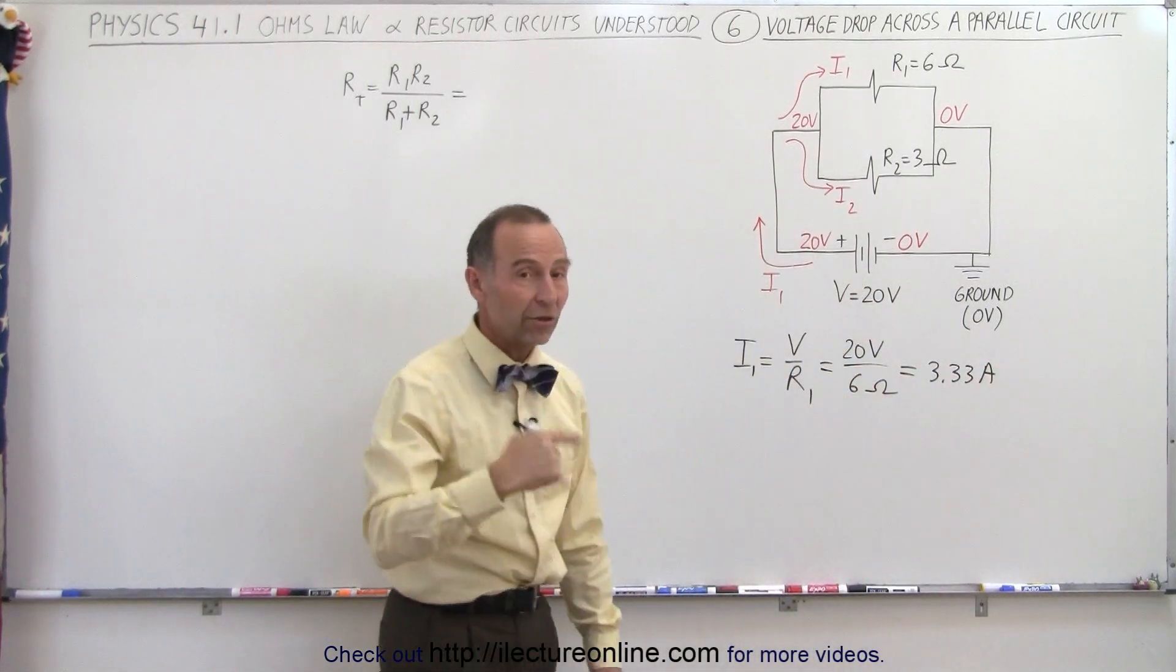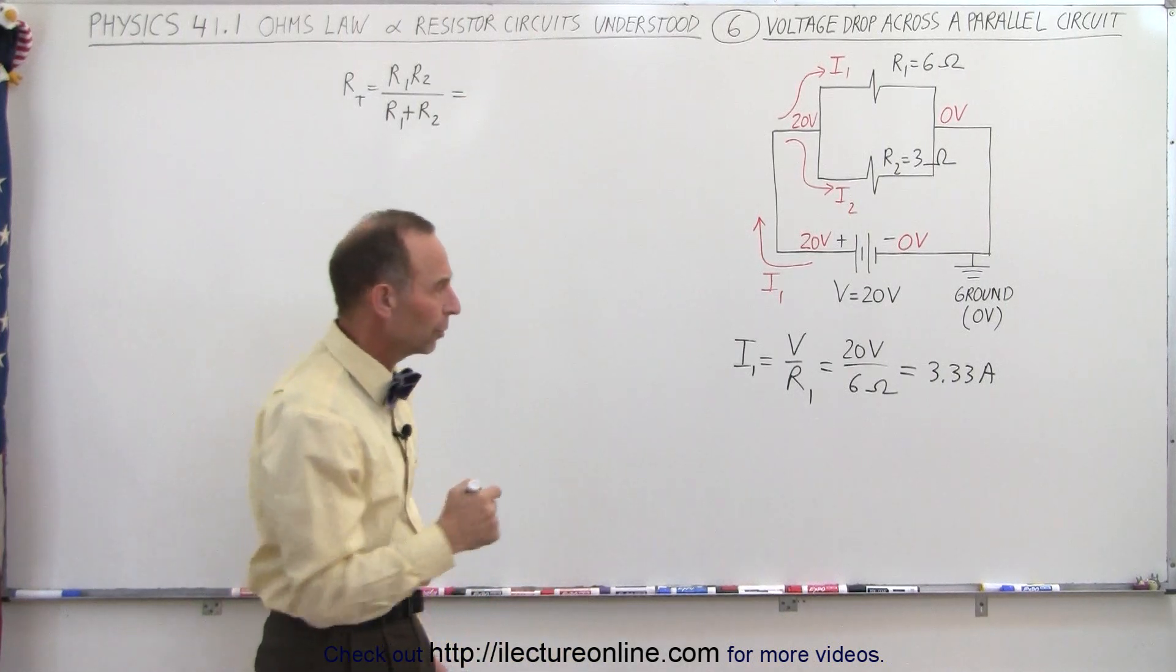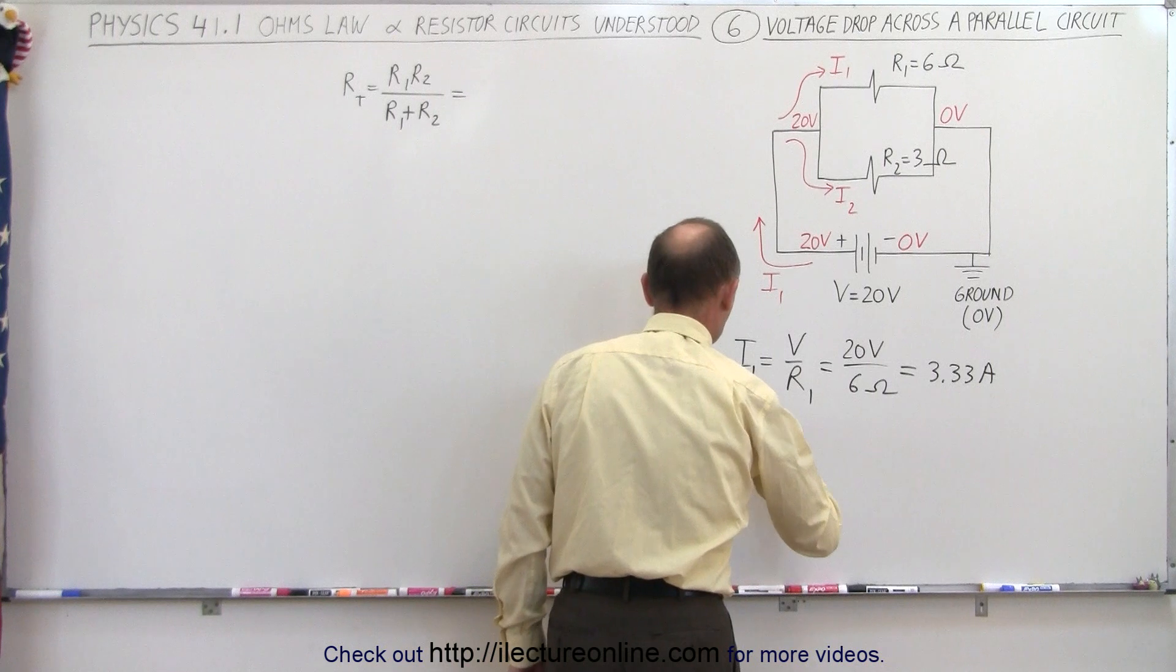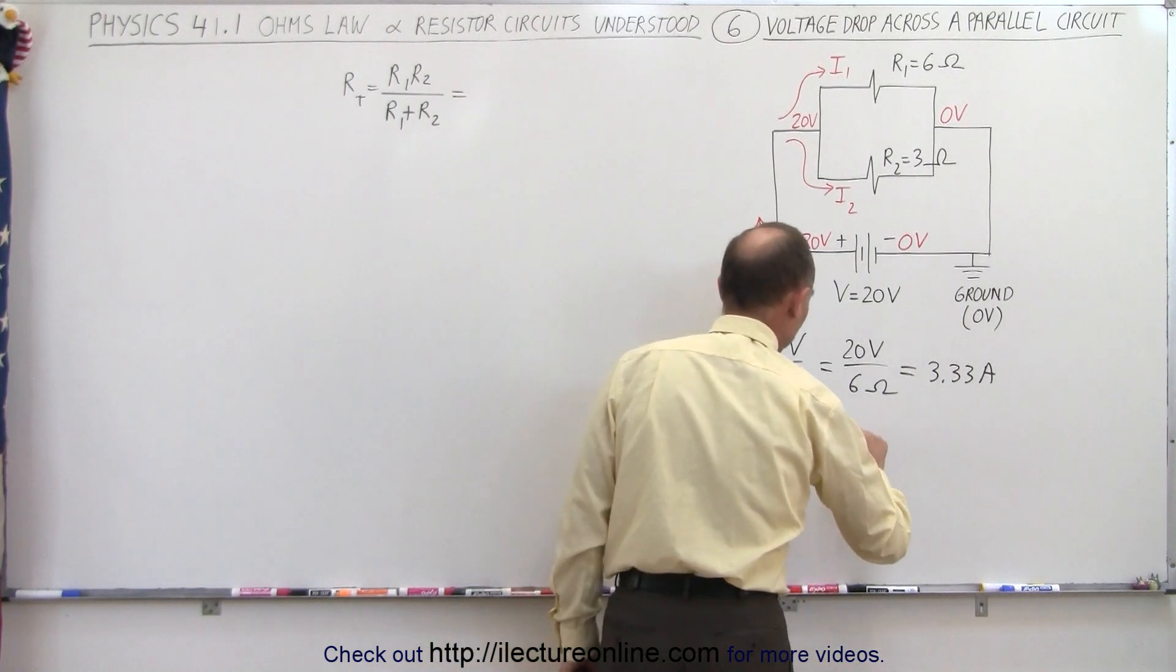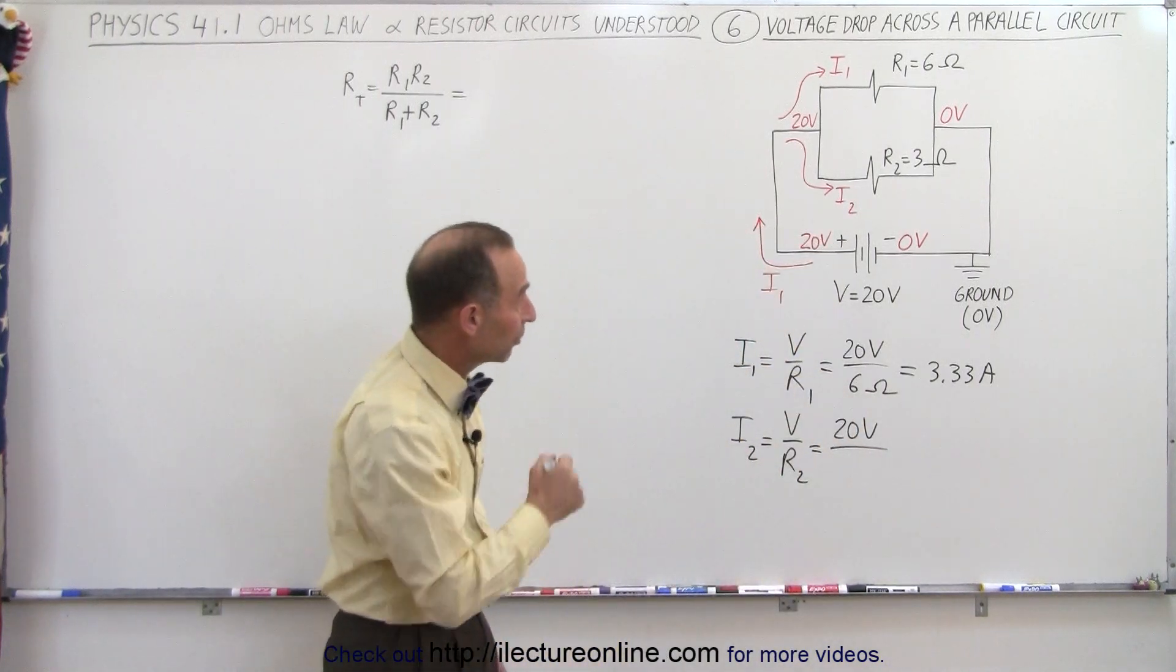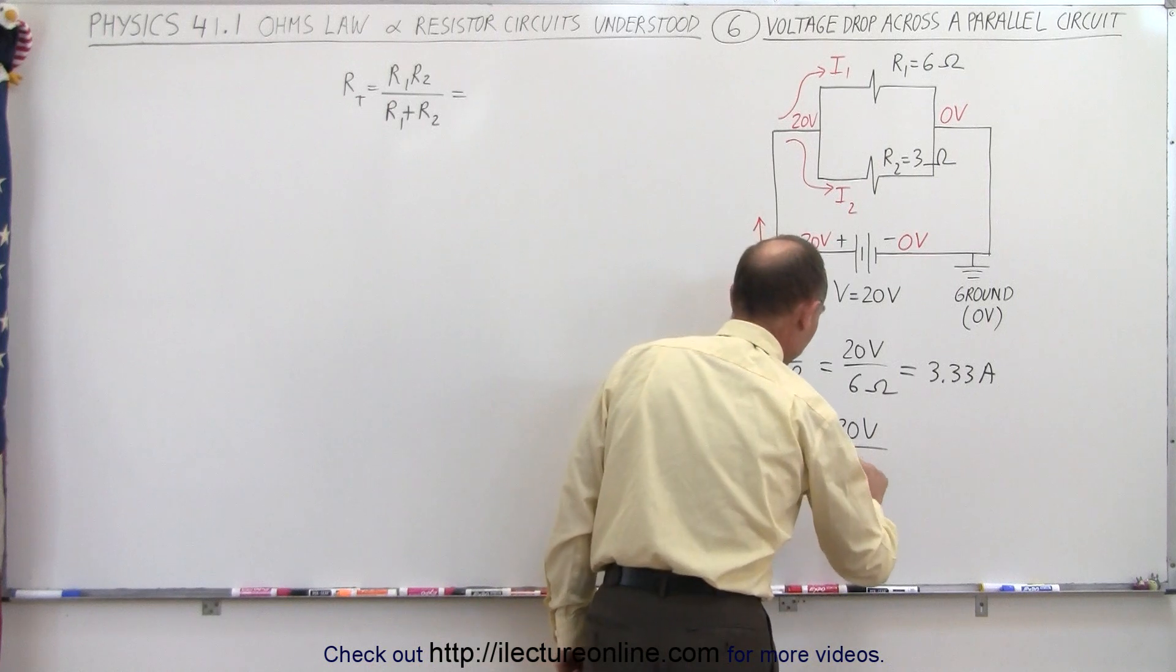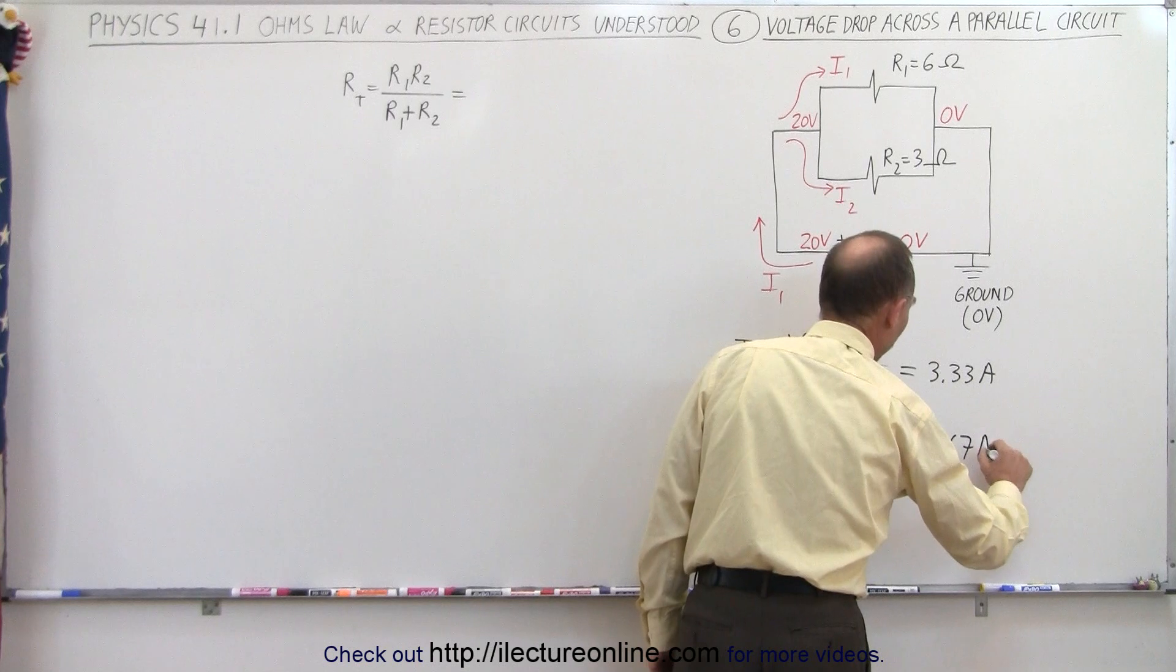So I1, the current in the top branch, is 3.33 amps. Now let's calculate the current in the bottom branch. So I2 is equal to V over R2, which is again 20 volts, because we have the same voltage drop across either resistor. And we divide that by 3 ohms, which means that this is equal to 6.67 amps.